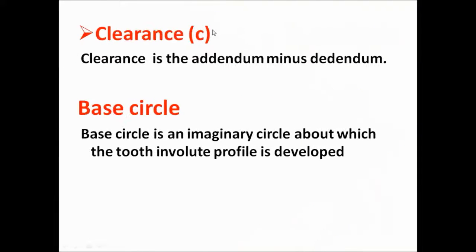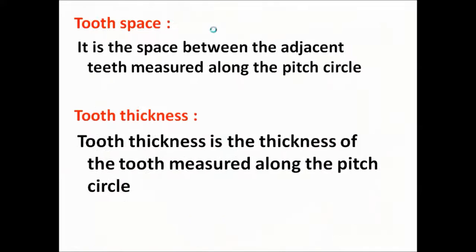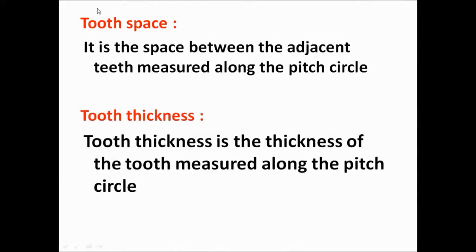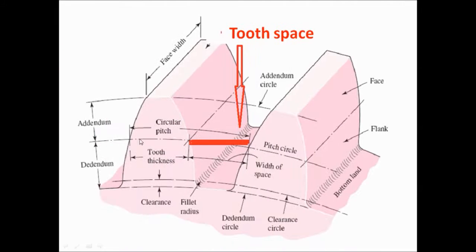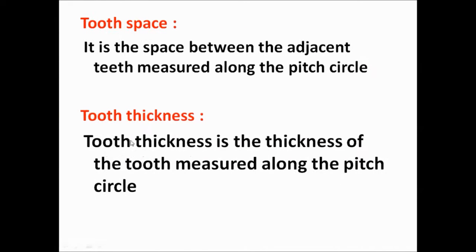Tooth space is the space between adjacent teeth measured along the pitch circle. Tooth thickness is the thickness of the tooth measured along the pitch circle.